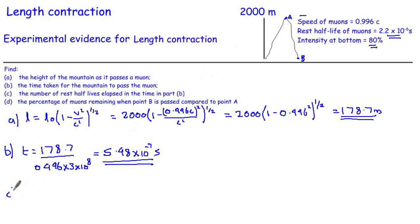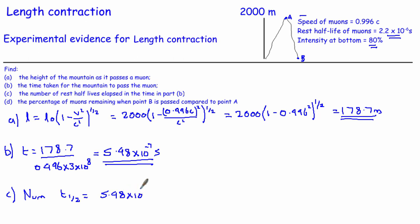Now we calculate the number of rest half-lives that go past in this time. The half-life doesn't change here because we're thinking about distance changing, not time — and because the distance has changed, the time it took to get from A to B has changed instead. The number of half-lives is 5.98 times 10⁻⁷ divided by one half-life (2.2 times 10⁻⁶ seconds). Doing that on the calculator gives 0.272.